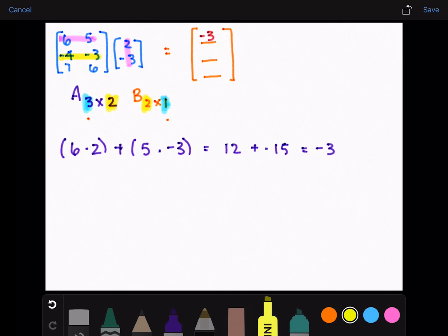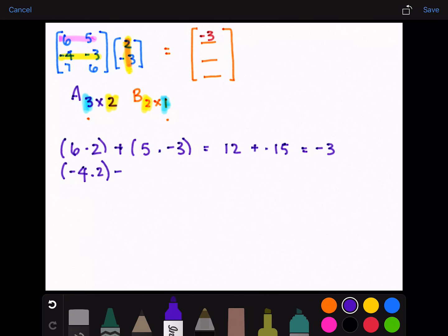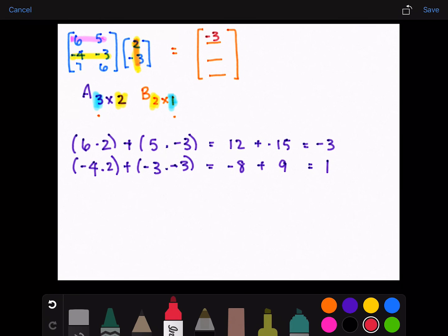Now you need to take the second row and times it by the first column. That will be negative four times two plus negative three times negative three, which gives us negative eight plus nine. That equals one. So one goes in there.